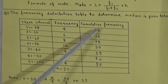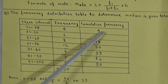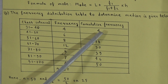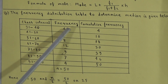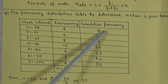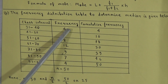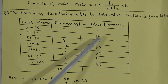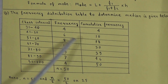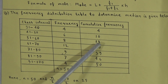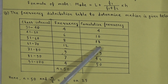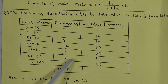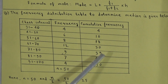To find cumulative frequency: for the first class, we take 4. In the second class, we add 4 plus 6 to get 10. In the third class, 10 plus 8 equals 18. Similarly, 18 plus 12 equals 30, 30 plus 9 equals 39, 39 plus 7 equals 46, and 46 plus 4 equals 50.